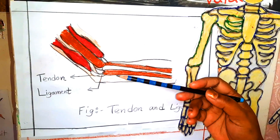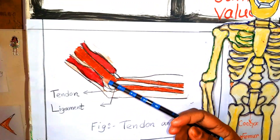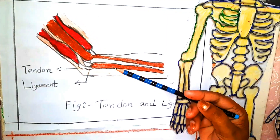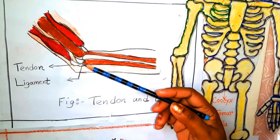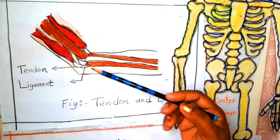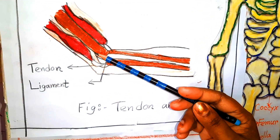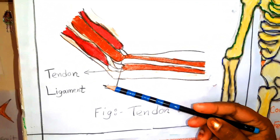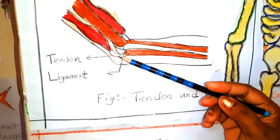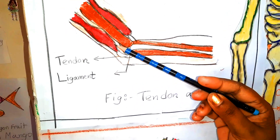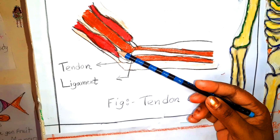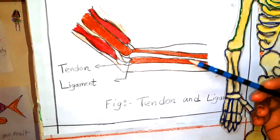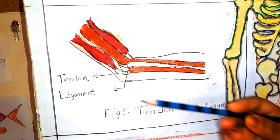You can see here one diagram. Here you can see the muscles, and here you can see the tendons. And this one is a ligament. So ligaments are attached bone to bone, and tendons are attached bone to muscle. So this is the difference between tendons and ligaments.